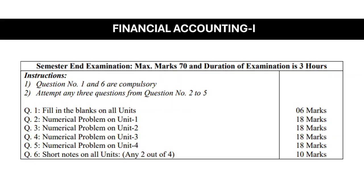Question No. 4 is a numerical problem on Unit No. 3, also for 18 marks. Unit No. 3 is accounting for leases and hire purchase system. The numerical problem on the hire purchase system under Question No. 4 carries 18 marks. Question No. 5 is also a numerical problem on Unit No. 4, for 18 marks. Unit No. 4 is royalty accounts — you have to solve the problem on royalty for 18 marks.